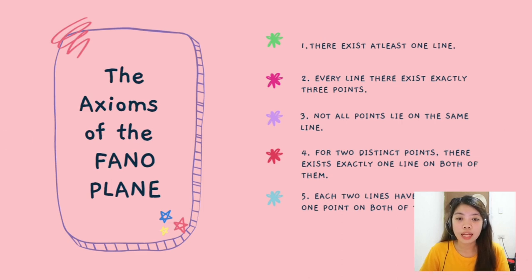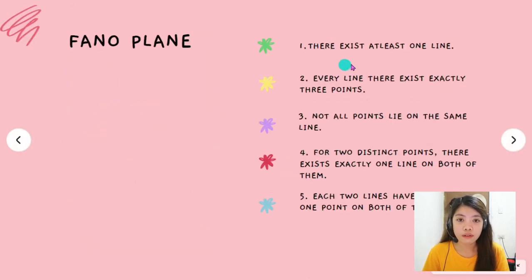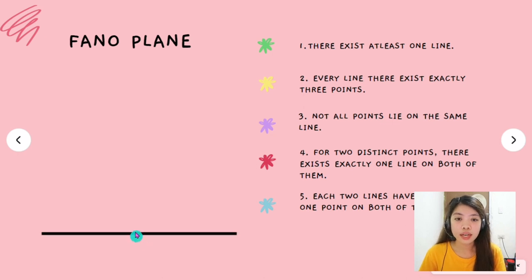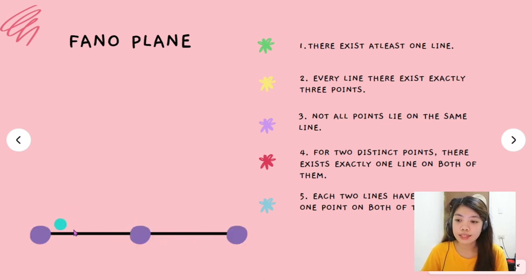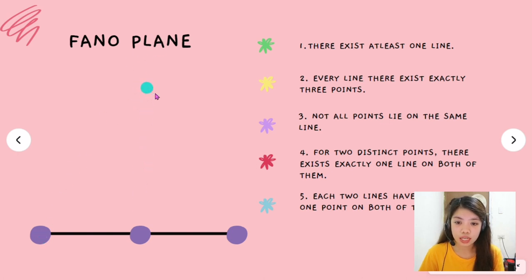For you to understand the axioms of the Fano Plane very well, let me show you illustrations. First, there exists at least one line — so I will put one line here. Next, every line has exactly 3 points — so I will put 3 points on this line. Next, not all points lie on the same line. It only means that there will be a point that will be connected to these 3 points, and it will look like this.